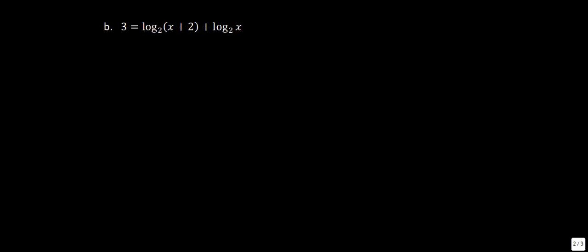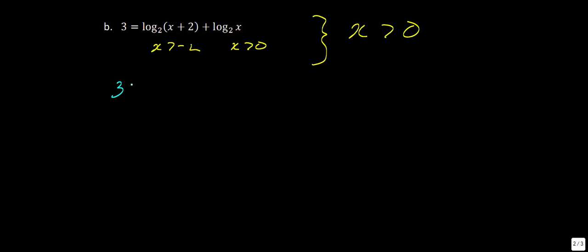For part b, I'll first look at what values of x this is defined for. x must be greater than negative 2 for one term, and x must be greater than 0 for the other. Since 0 is the bigger restriction, x is defined for values greater than 0. Using the laws of logarithms, the two logs being added together can be rewritten as log base 2 of (x + 2) times x.